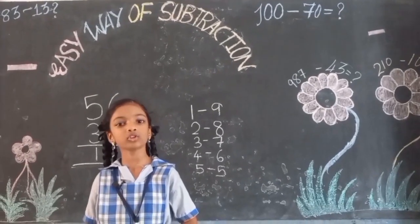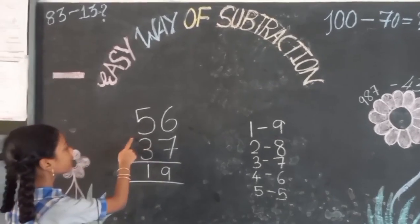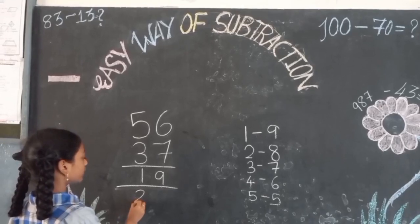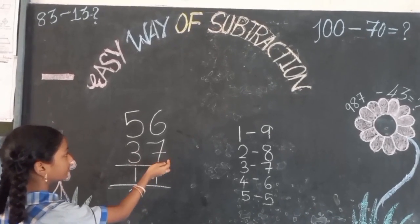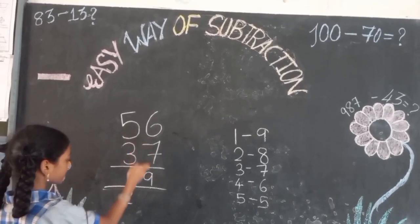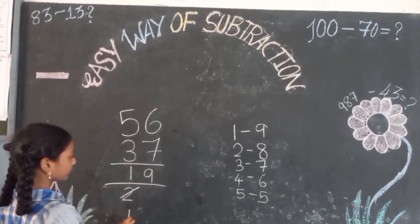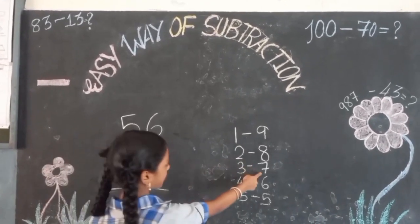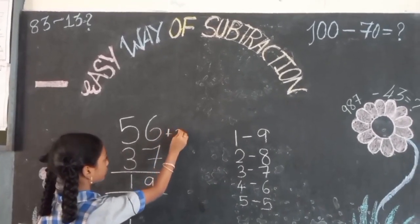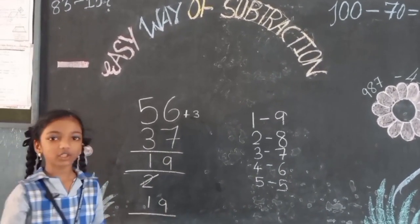We have to start solving from left to right. Take the numbers in the first column: 5 minus 3 is 2. Now in the second column, we have 6 minus 7. We cannot subtract 7 from 6, so reduce 1 from 2. Then check the complement of 7, it is 3. Then add 3 to 6, it is 9. Here is your answer.